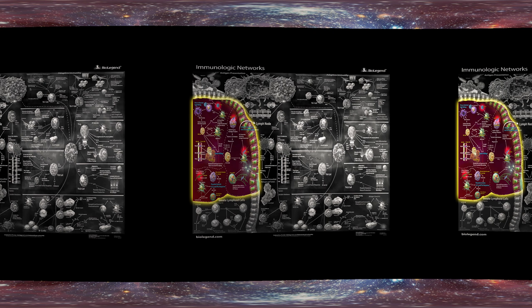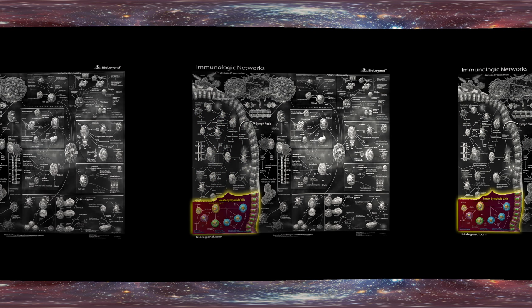Innate lymphoid cells can be difficult to phenotype, as they don't share markers commonly associated with lymphocytes, despite sharing similar functionalities. Group 1 consists of NK cells and ILC1 cells that have TH1-like functions. Group 2 consists of TH2-like cells, called ILC2s. And finally, group 3 consists of lymphoid tissue inducer, or LTI cells, which aid in lymphoid tissue development, and NCR positive or negative ILC3 cells. Group 3 promotes a TH17-like response.